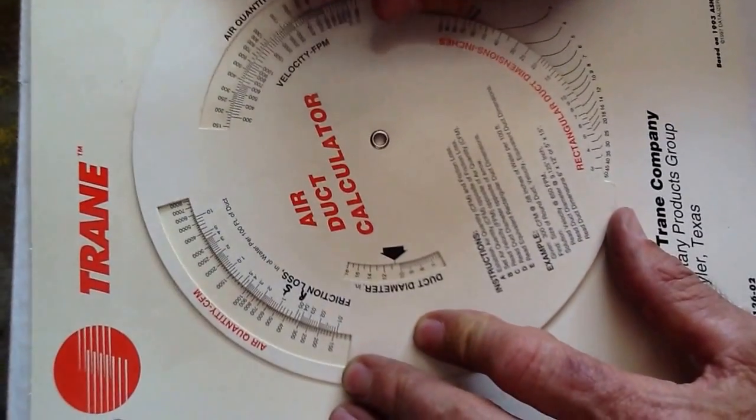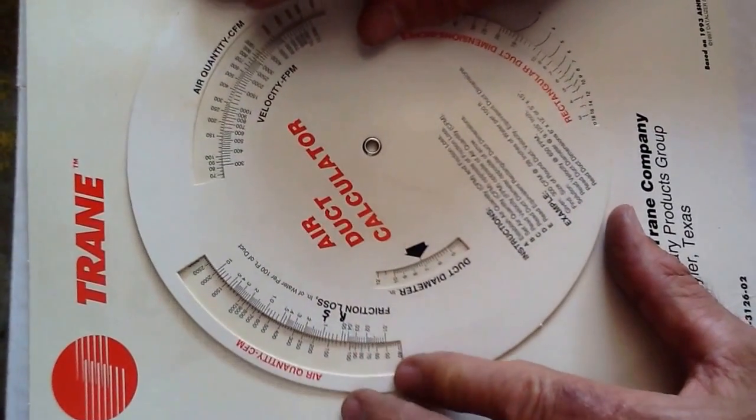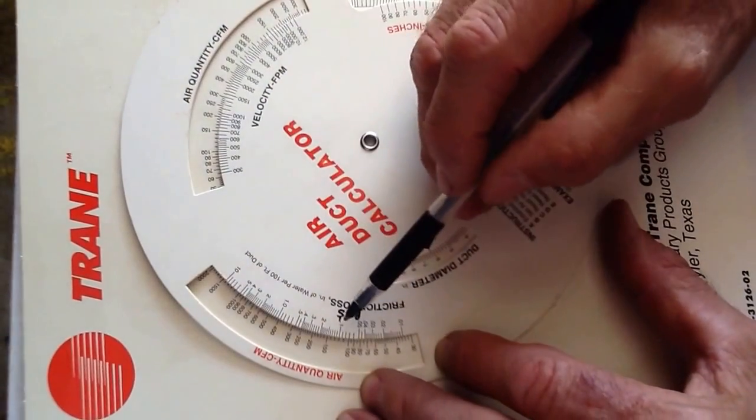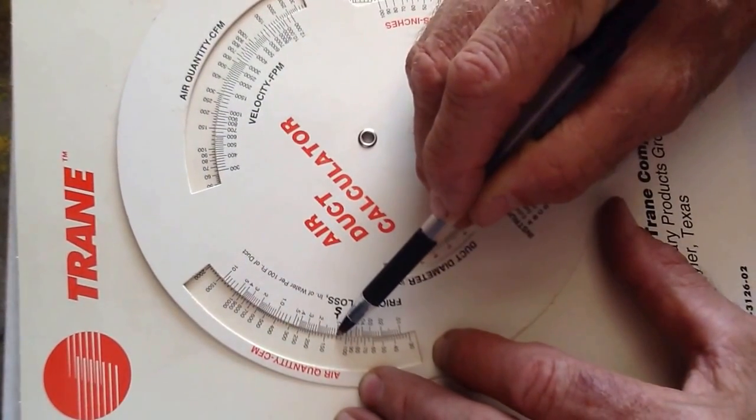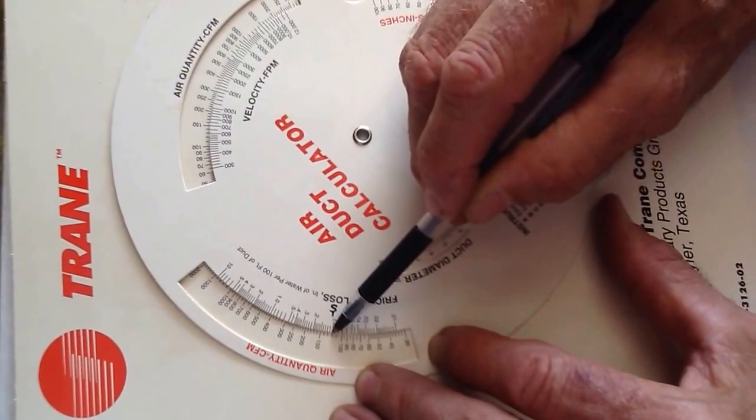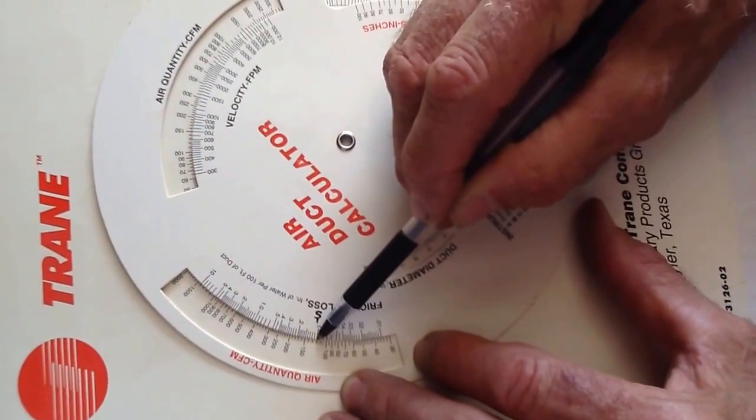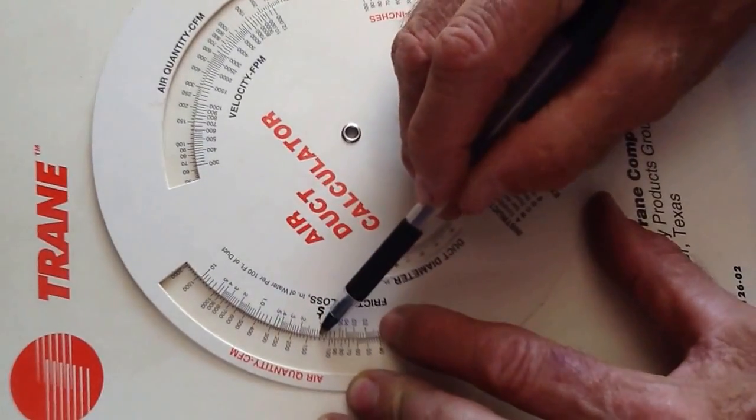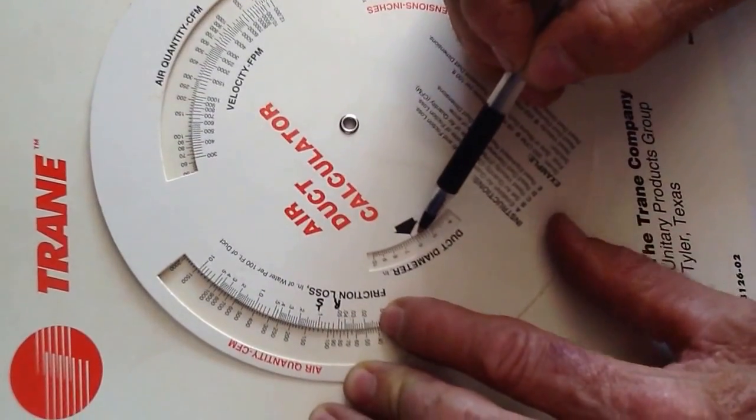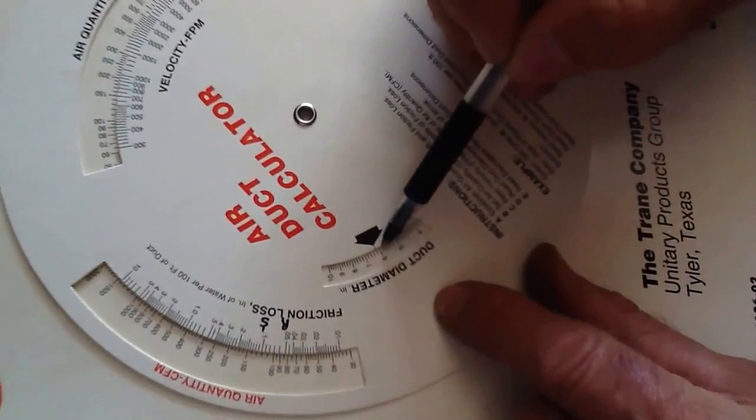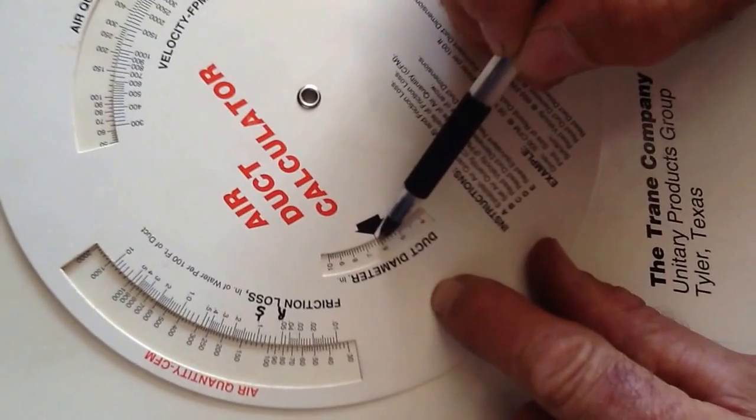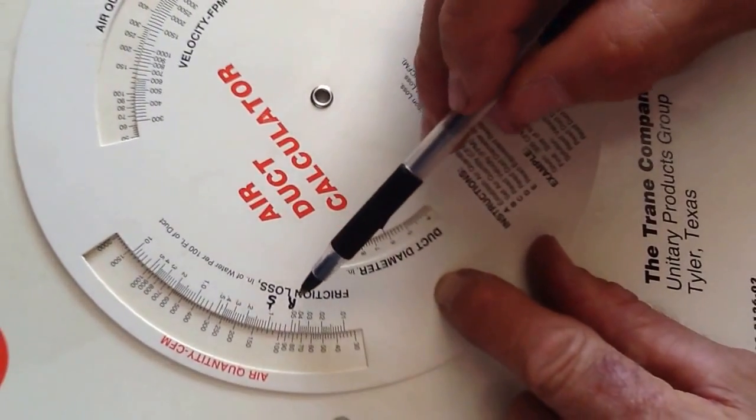At 120 square feet, one CFM per square foot, that's right there - 120. You look at this right here, you see the six inch, you automatically go up. They don't make a six and a quarter, you go to the seven inch. So that particular bedroom would require a seven inch flex.